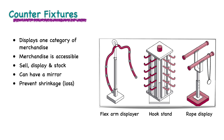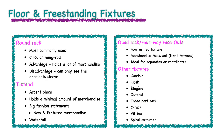Some counter fixtures may have a mirror attached so that the consumer can hold merchandise up and get a visual of how it will look on them. Floor and freestanding fixtures are designed to hold and show merchandise on the sales floor. The major types of floor fixtures include the round rack, T-stand, quad rack, and four-way face-out.